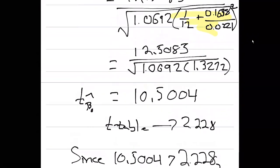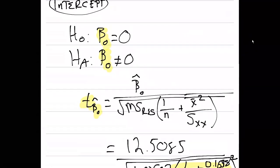In other words, we have evidence to say that the value beta zero is not equal to zero. We reject the null hypothesis in that case.